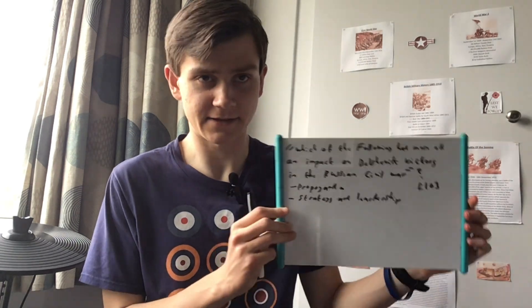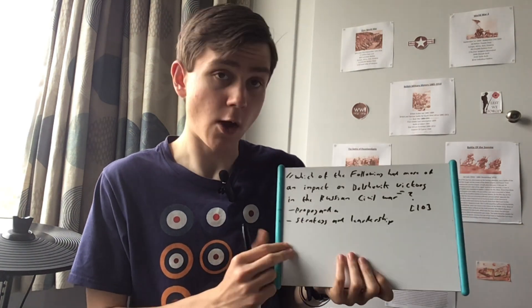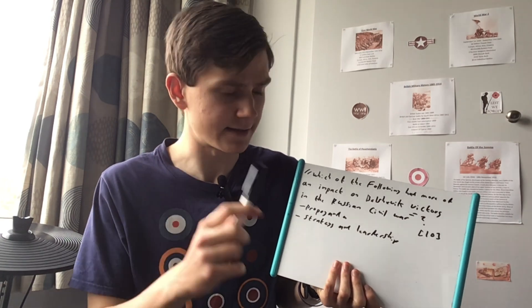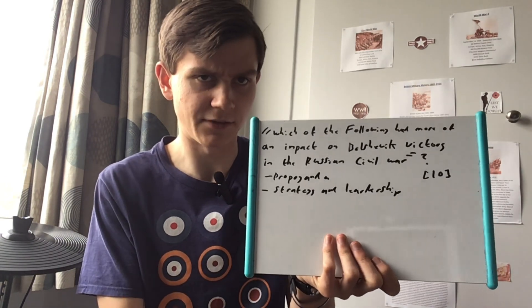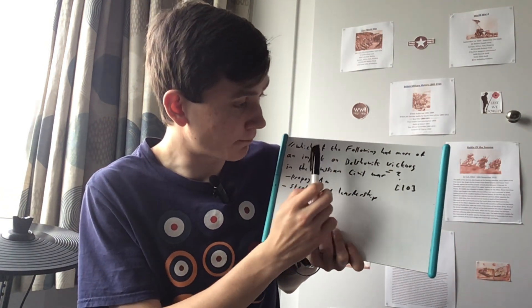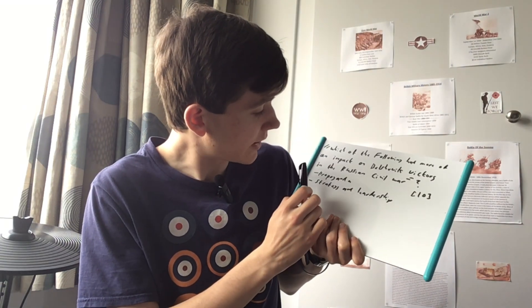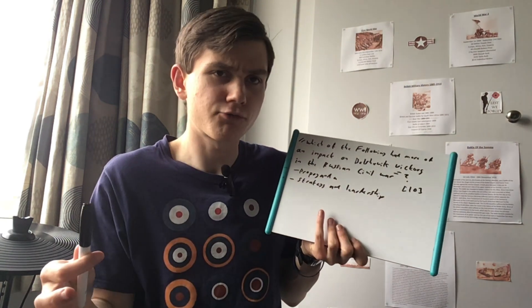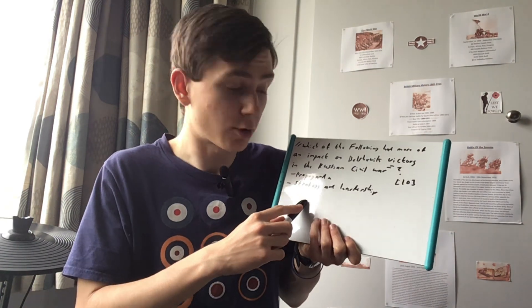So, the 10 marker I've chosen to do today — and I've got my AI to mark it for me, actually on Snapchat, so I could give you a prompt answer — is based on the third section of the Russian course, covering the Civil War and Lenin period. The question is: which of the following had more of an impact on Bolshevik victory in the Russian Civil War? You've got a choice between propaganda and strategy and leadership, for 10 marks. Straight away, you need to talk about both of these factors and decide which one you think is more relevant.